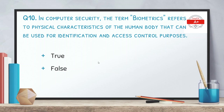The next question is: in computer security, the term biometric refers to physical characteristics of the human body that can be used for identification and access control. True or false? The correct answer is true. Biometric features like fingerprints and retina scans can be used for identification and access control.